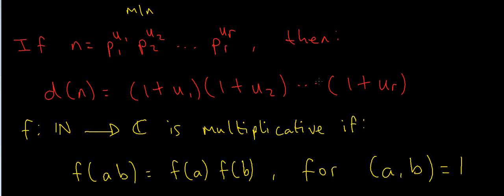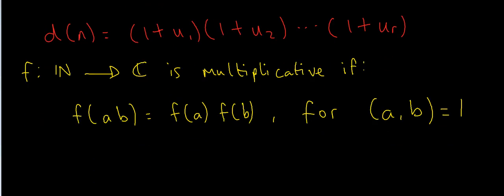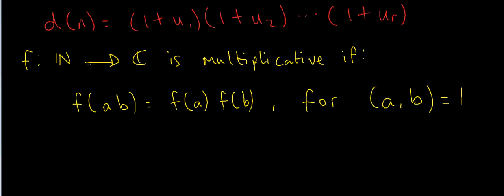In this video I want to prove that the divisor function is actually multiplicative. So what does multiplicative mean? If you have an arithmetic function f mapping the natural numbers to the complex numbers, we say that f is multiplicative if f(ab) = f(a) times f(b) whenever the natural numbers a and b are coprime — in other words, their greatest common divisor is equal to 1.